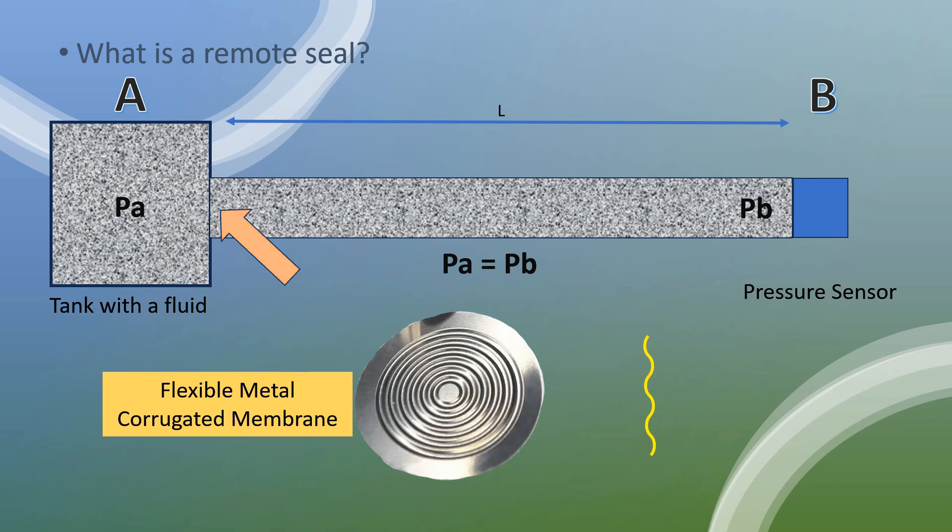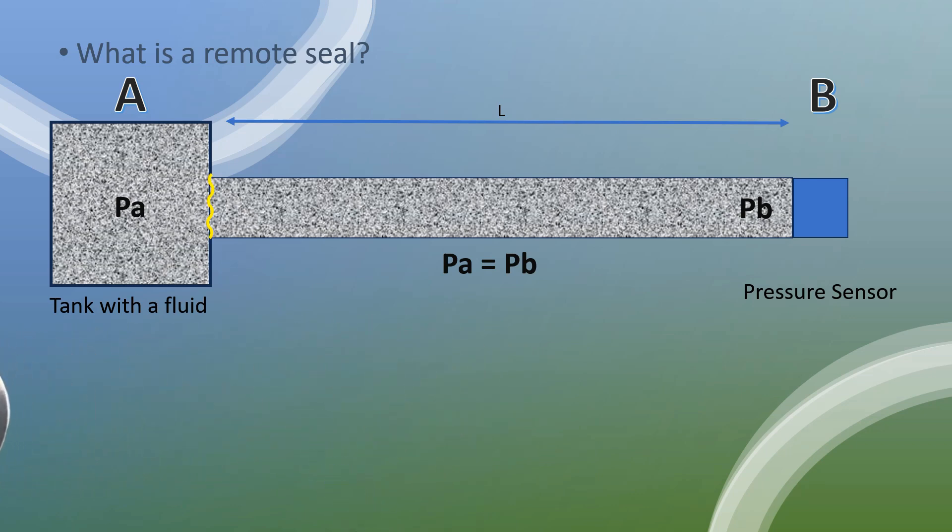Let's consider we want to separate point A from point B, not allowing the fluid to go all the way to the pressure sensor. For this situation, we can install this diaphragm in this position. We need to consider what is in this pipe. Because if it's gas, a small movement from the diaphragm will not reflect the pressure point A to point B.